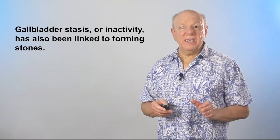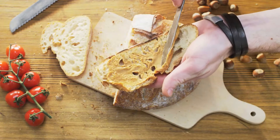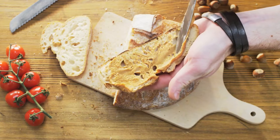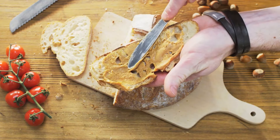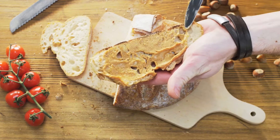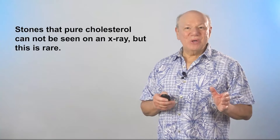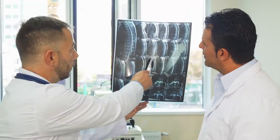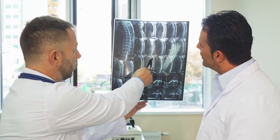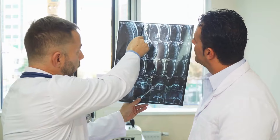Gallbladder stasis or inactivity has also been linked to forming stones. If the gallbladder just sits there, it can cause the solids to separate and precipitate out — kind of like the way oil in your peanut butter jar separates from the peanuts if it sits too long. Stones that are pure cholesterol cannot be seen on x-ray, but this is rare, as cholesterol is sticky and cholesterol stones also include some calcium which does show up on x-rays.